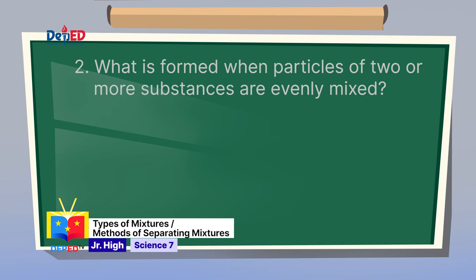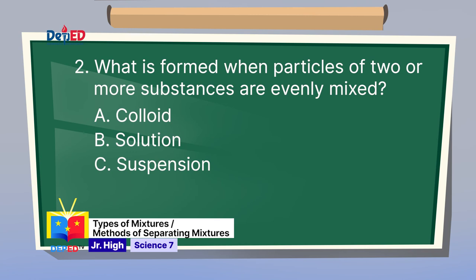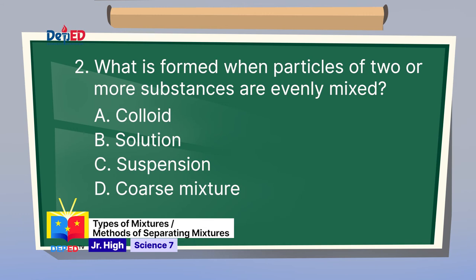Number 2: What is formed when particles of two or more substances are evenly mixed? A. Colloid. B. Solution. C. Suspension. D. Coarse mixture. When particles of two or more substances are mixed evenly, it is called a solution — letter B.